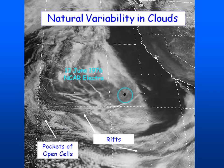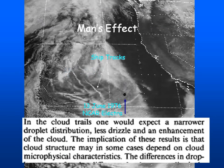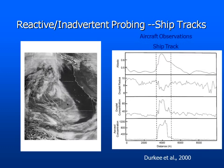You can see just from the satellite image the natural variability is fairly large. Doug Lilly really coined the idea that the marine stratocumulus is a great natural laboratory because the synoptic variability is weak and you have nice uniform cloud decks, except that there is a certain level of natural variability within these clouds, which does complicate this problem. We even speculated that on these cloud trails one would expect a narrow drop size distribution, less drizzle, and enhancement of a cloud.